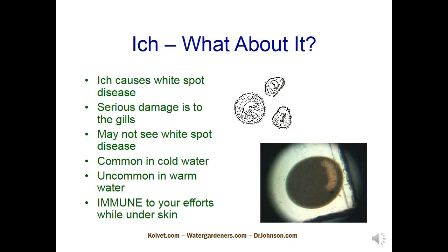We're going to cover ich first — that's white spot disease. I have a video in my channel of what these parasites look like under the microscope. Basically just a ball covered with cilia, and a U-shaped macronucleus inside. When you're looking at parasites and you see that U-shaped nucleus, you should know right off the bat that's white spot. It can't be anything else.